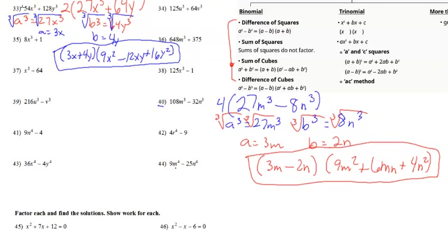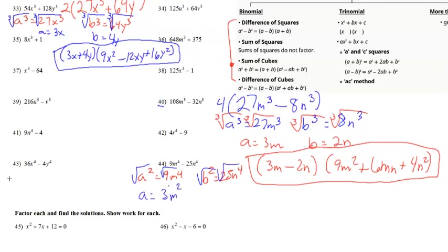Let's do number 44: 9m⁴ − 25n⁴. This is a difference of two even powers, so we can treat it as a difference of squares. We say a² = 9m⁴ and b² = 25n⁴. Taking the square root of each side, a = 3m² because 4÷2 = 2 and 3×3 = 9, and b = 5n².